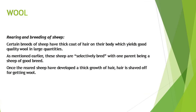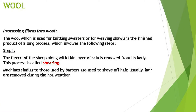Certain breeds of sheep have a thick coat of hair on their body which yields good quality wool in large quantities. As mentioned earlier, these sheep are selectively bred, with one parent being a sheep of good breed. Once the reared sheep have developed a thick growth of hair, the hair is shaved off for getting wool.